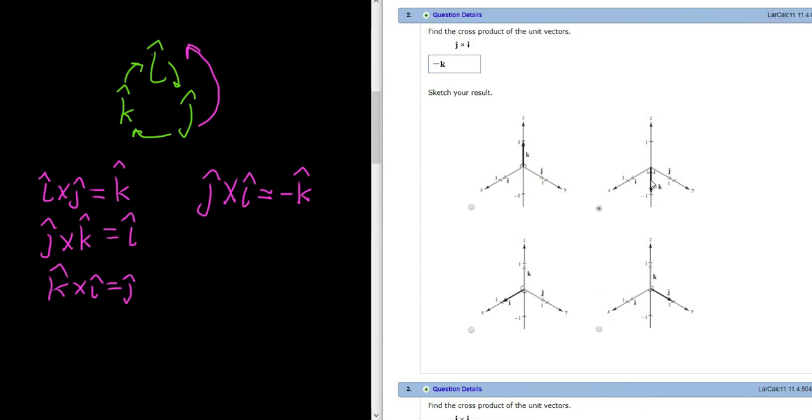The vector is going down. Because K hat is on the Z axis and it's length one, negative K hat is in the opposite direction. It's also on the Z axis, but it's going down one.